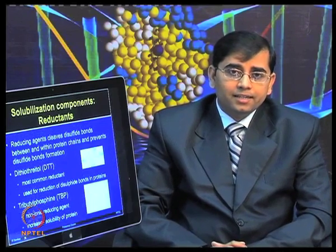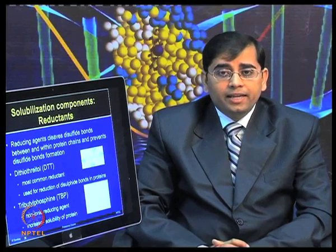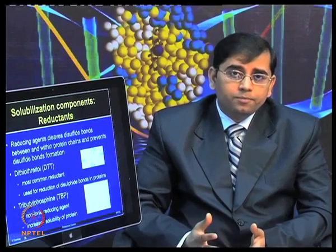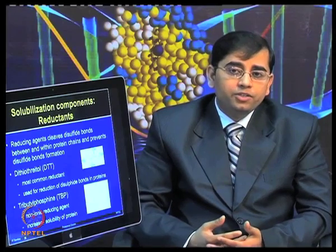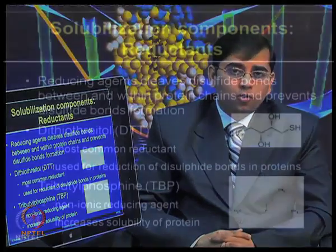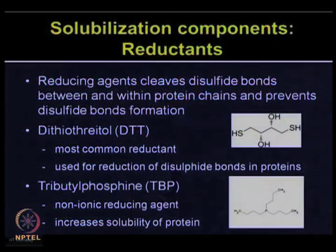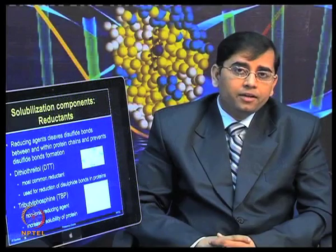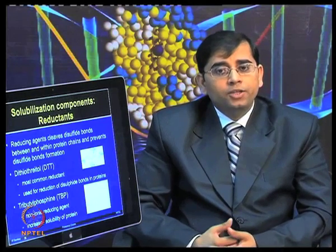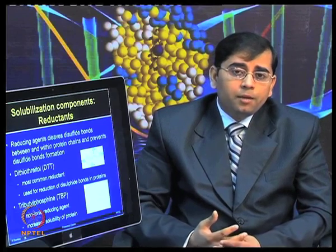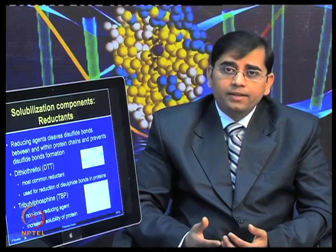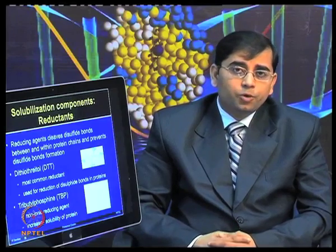Now let us talk about reductants. In solubilization, reducing agents cleave the disulfide bonds present between and within protein chains and prevent disulfide bond formation. Most commonly used reductants are dithiothreitol (DTT) or beta-mercaptoethanol, used for reduction of disulfide bonds in proteins. Tributylphosphine (TBP) is a non-ionic reducing agent, another very commonly used reducing agent when the aim is to increase protein solubility. It is often used in 2DE-based gel proteomic applications.